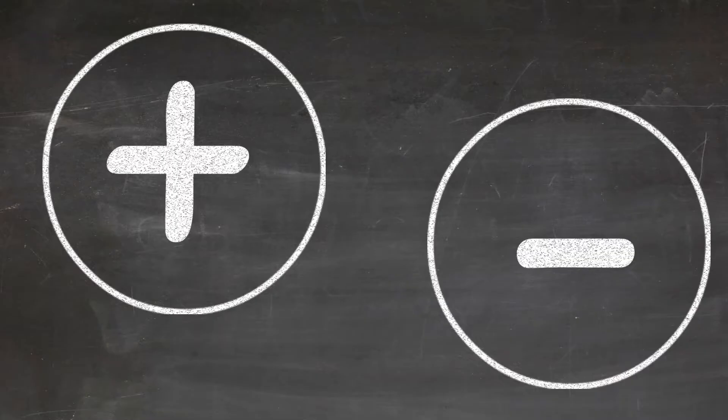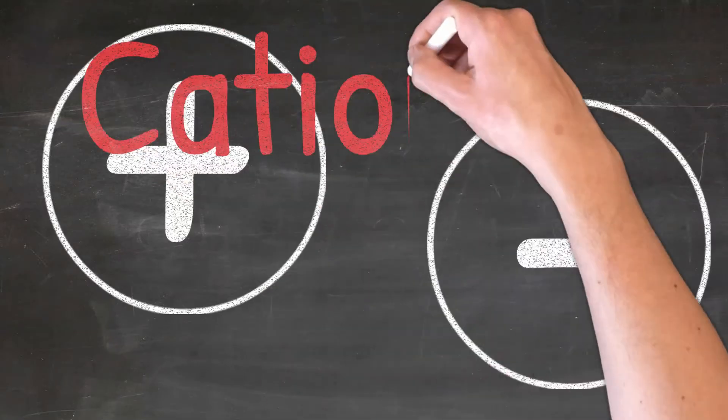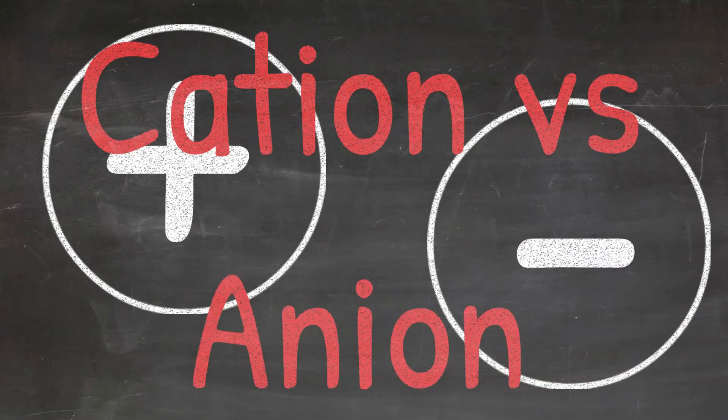Ions are just atoms with a charge, but the charge can be positive or negative. In this video, we are going to cover the difference between cations and anions and how they form.